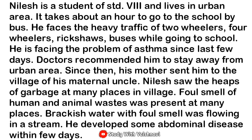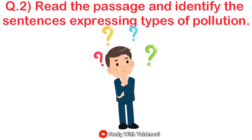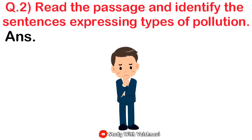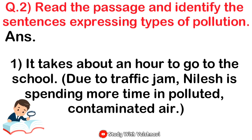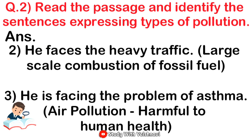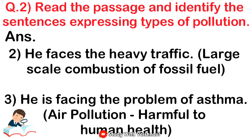He developed some abnormal diseases within a few days. Now students, here we have to find the sentences and identify which pollution is present. There are seven sentences. First: it takes about an hour to go to school due to traffic — Nilesh is spending more time in polluted, contaminated air. Second: he faces heavy traffic — large-scale combustion of fossil fuel. Third: he is facing the problem of asthma — air pollution is harmful to human health.